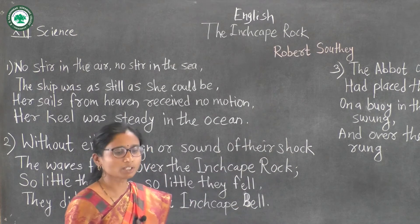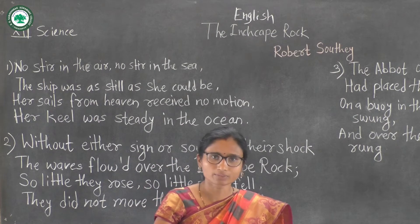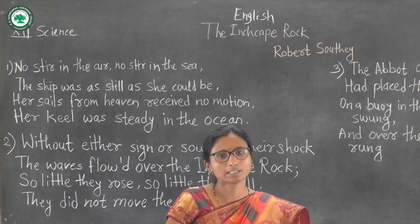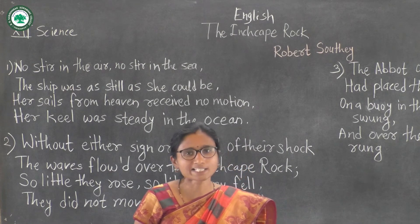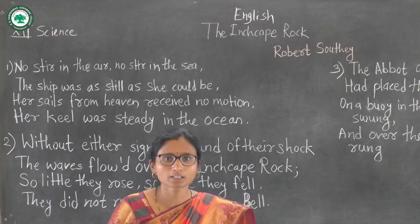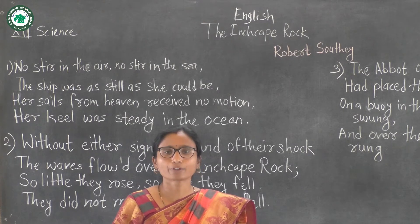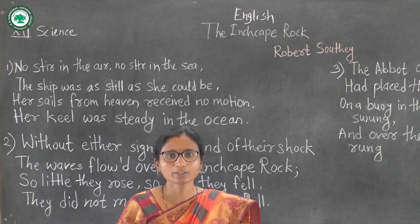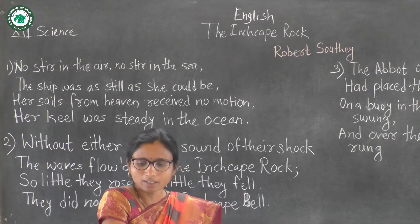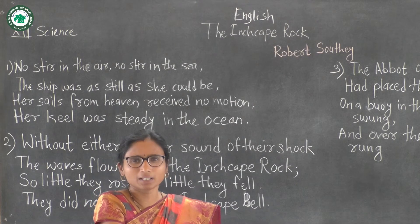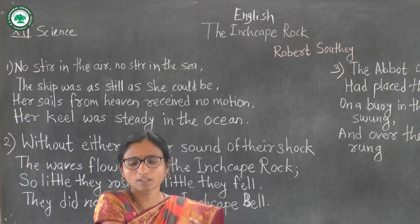The poet is Robert Southey. He was born in 1774 and died in 1843. He was born in Bristol, England, and was educated at Westminster School and Balliol College, Oxford. He was Poet Laureate of England from 1813 to 1843. Poet Laureate means the poet officially appointed by a government, typically expected to compose poems for special events and occasions.